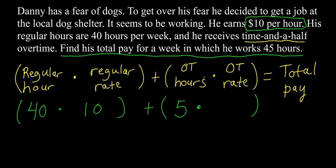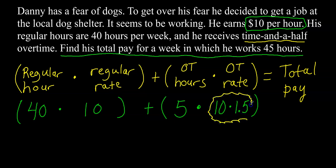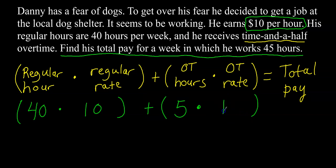The tricky part is the overtime rate. The regular rate is $10, so I take 10 times 1.5 — time and a half — which gives me 15. So he gets paid $15 an hour for overtime, but only $10 an hour at the regular rate. That equals total pay. So: 40 times 10 is 400, plus 5 times 15 is 75, and 400 plus 75 gives us a total pay of $475. That's what you should see on your paycheck.